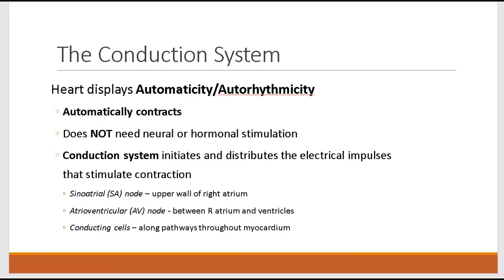The heart is special in that it displays automaticity, or auto-rhythmicity. This means the heart automatically contracts without the need for neural or hormonal stimulation — very different from skeletal muscle, which had to be stimulated by a motor neuron before it would contract. Cardiac muscle does not need to be stimulated by a neuron or hormone to contract, because its specialized cells of the conduction system initiate and distribute these electrical impulses or action potentials that generate contractions.